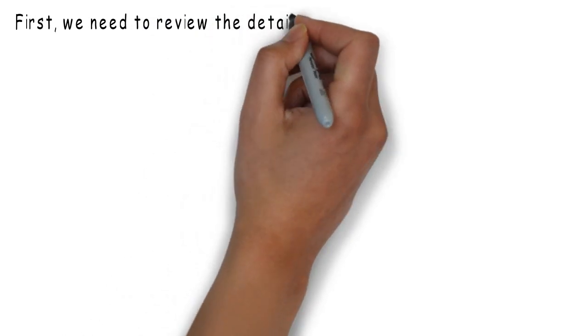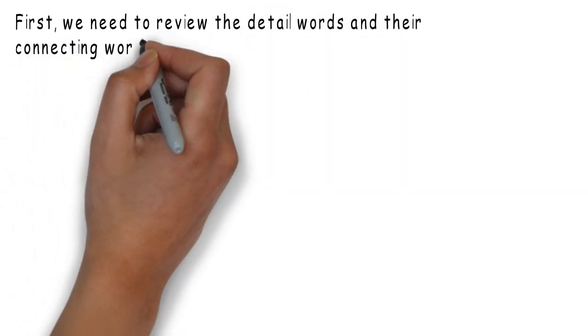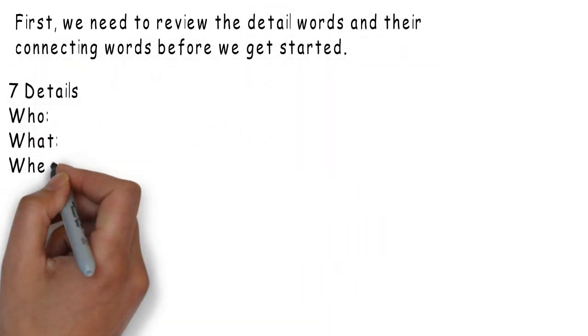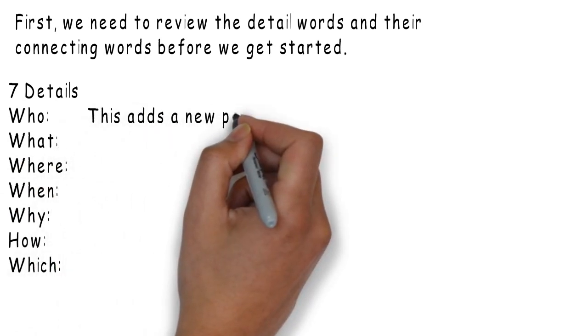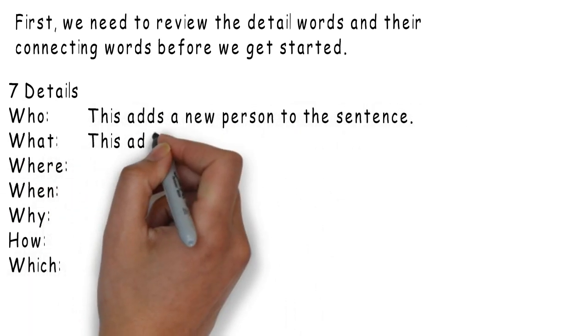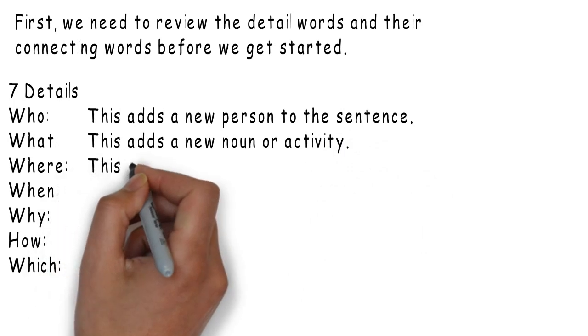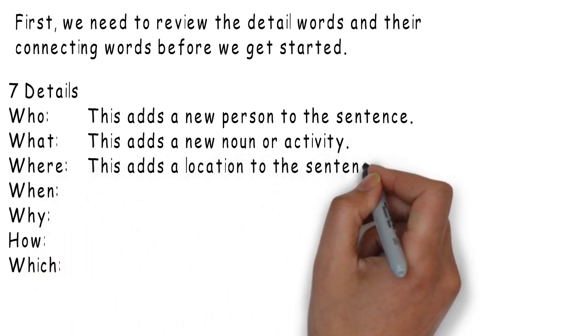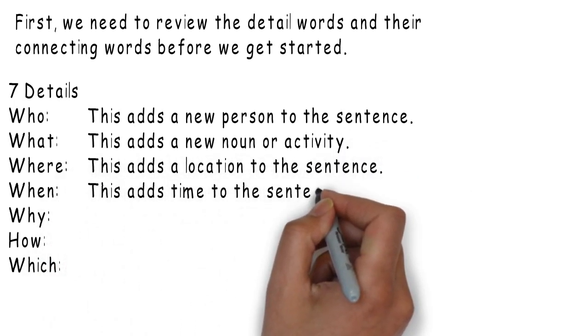First, we need to review the detail words and their connecting words before we get started. Here are the seven details. Who: This adds a new person to the sentence. What: This adds a new noun or activity. Where: This adds a location to the sentence.